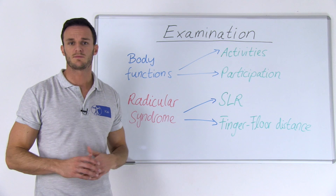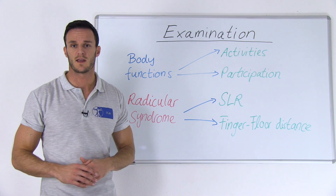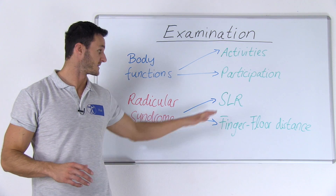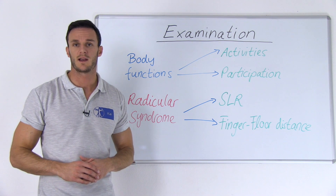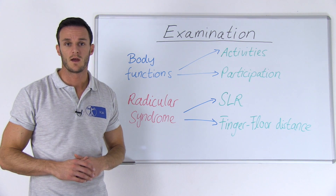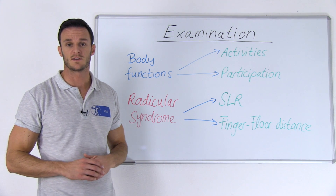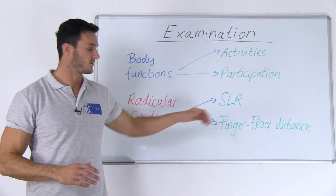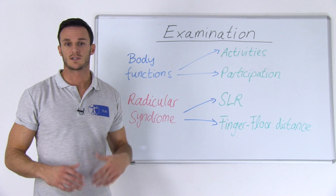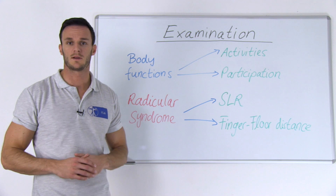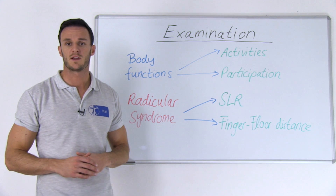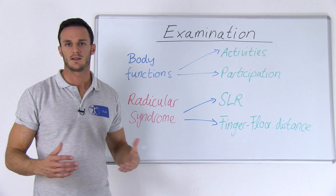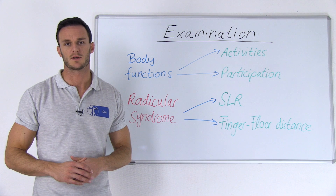If you suspect radicular radiation, the KNGF recommends to perform the straight leg raise test, which you can watch by clicking in the top right corner. Furthermore, they advise to examine muscle strength as well as the finger to floor distance, which is a test where the patient bends forward — if the finger to floor distance is greater than 25 centimeters, this indicates a positive test.